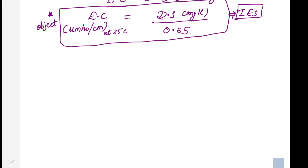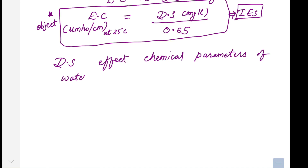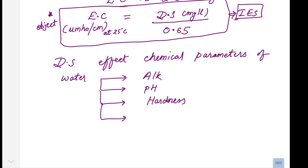Dissolved solids affect most of the chemical parameters of water. To list the chemical parameters affected by dissolved solids: alkalinity, pH, hardness, chlorides, fluorides, and metals such as copper, zinc, iron, and manganese. We can say that dissolved solids comprise all other chemical parameters of water, making it an important parameter. Now we move ahead to the next chemical parameter: pH.